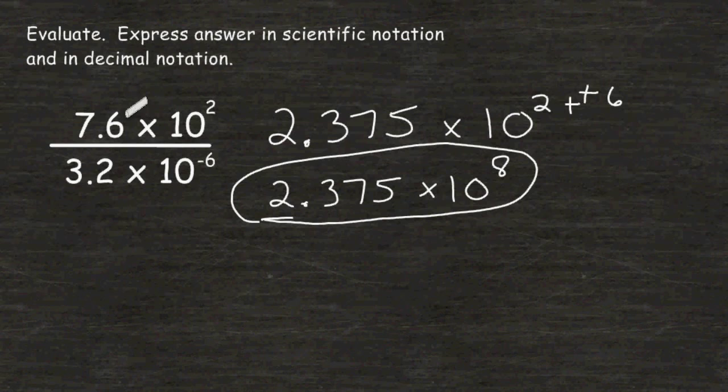Now we are also being asked to express our answer in decimal notation. That just means you take a look at the exponent of the base 10, and you are going to have to move the decimal that many place values. You just have to determine whether you move the decimal that many spaces to the left or to the right. Well, if you take a look, 10 to the eighth power is a really large number. So, of course, 2.375 has to increase in value. And the only direction that you can move this decimal to increase its value is to the right.